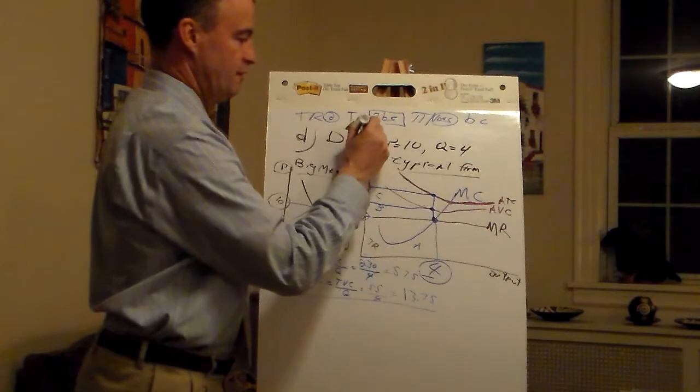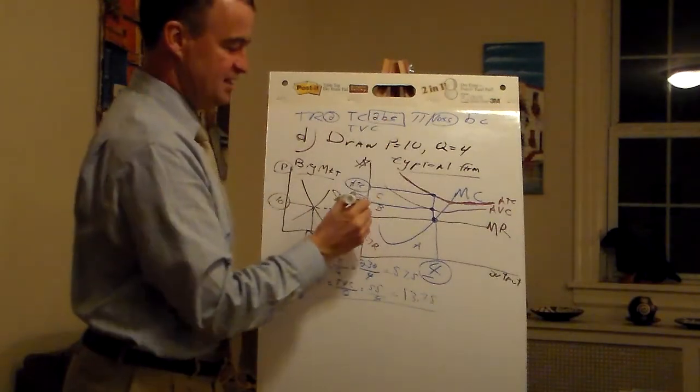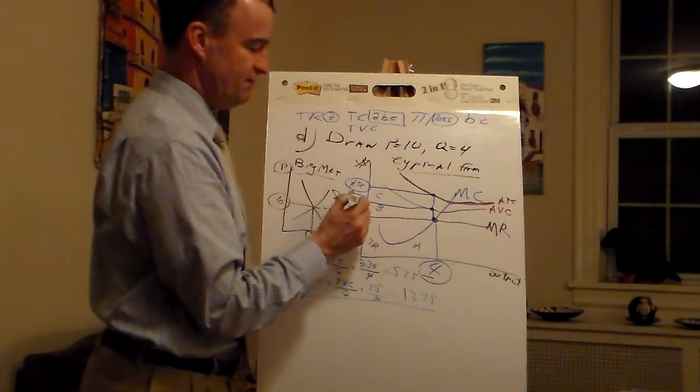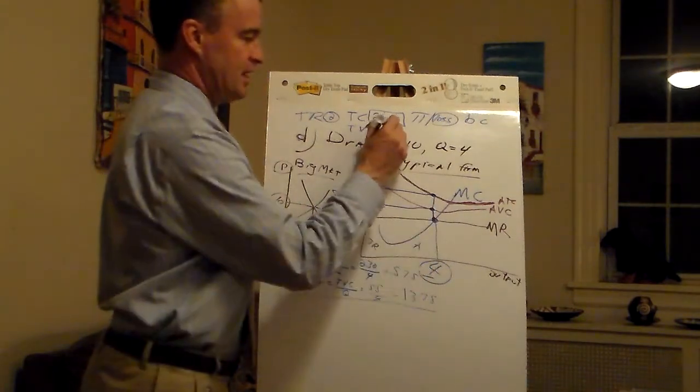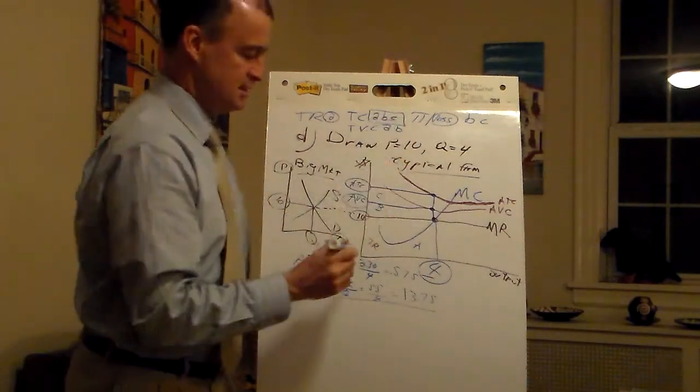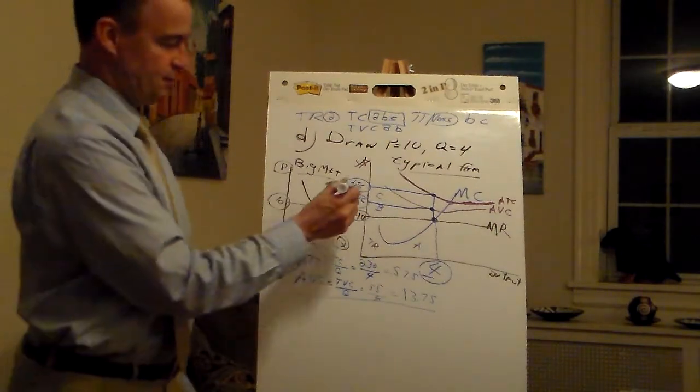Finally, total variable cost. A, V, C times Q. A, V, C. Looks like A and B. It's a box, remember.